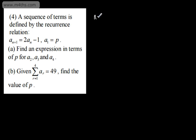When n is equal to 1, we will have now a2, substituting in 1 here, will be 2 a1 minus 1. So that's going to give us 2 lots of a1, so that's going to be 2p minus 1.